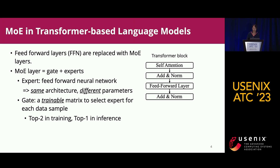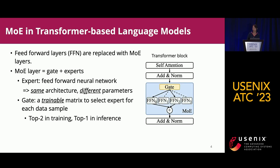The common practice is to replace the original feedforward layer in the transformer block architecture with MOE layers. One MOE layer consists of a gating network and several experts, where each expert is a feedforward network. All experts have the same architecture but different parameters. The gating network is a trainable matrix that computes the probability of each data sample to each expert, dispatching it to the most suitable experts. To achieve sparsity, top-two gating is used in training and top-one gating in inference.